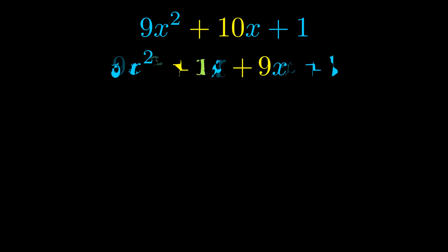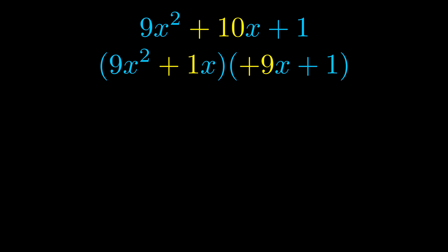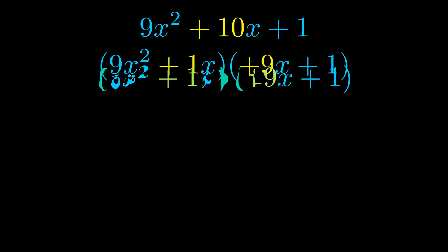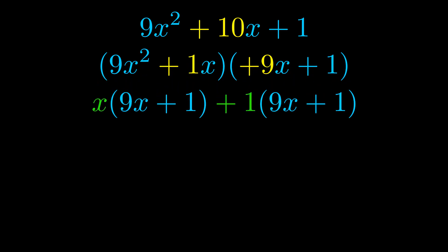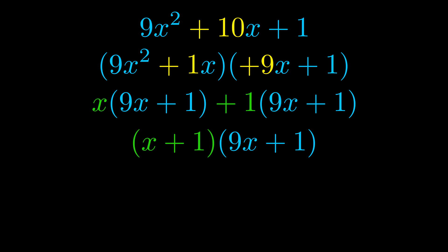Once we've done this, we go ahead and put parentheses around the first term and the last term, so that we can take the greatest common factor out of both terms. We can see the greatest common factor is now outside in green. Notice also how what remains inside the parentheses is the same in both cases — the blue values are the same. Those blue values will become one of our factors, and we will combine the two green GCF values we pulled out to get the other one. And that is our fully factored equation.